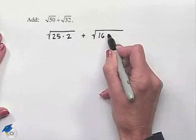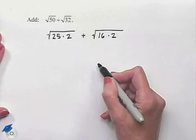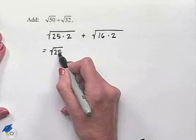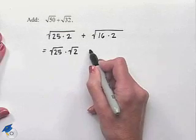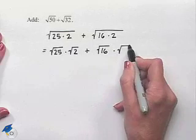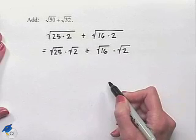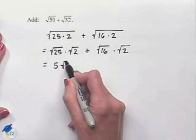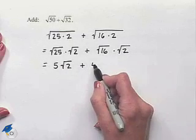Now we're going to take the square root of 25 separated from the square root of 2. We'll do the same thing for our second group—the square root of 16 times square root of 2. The square root of 25 is 5, the square root of 16 is 4.